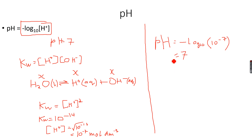At room temperature we know that water is neutral because it has a pH of 7, and we just proved that: we first calculated the concentration of H+ ions and then calculated the pH to get 7. So we can say that at room temperature water is neutral — it is neither acidic nor basic.